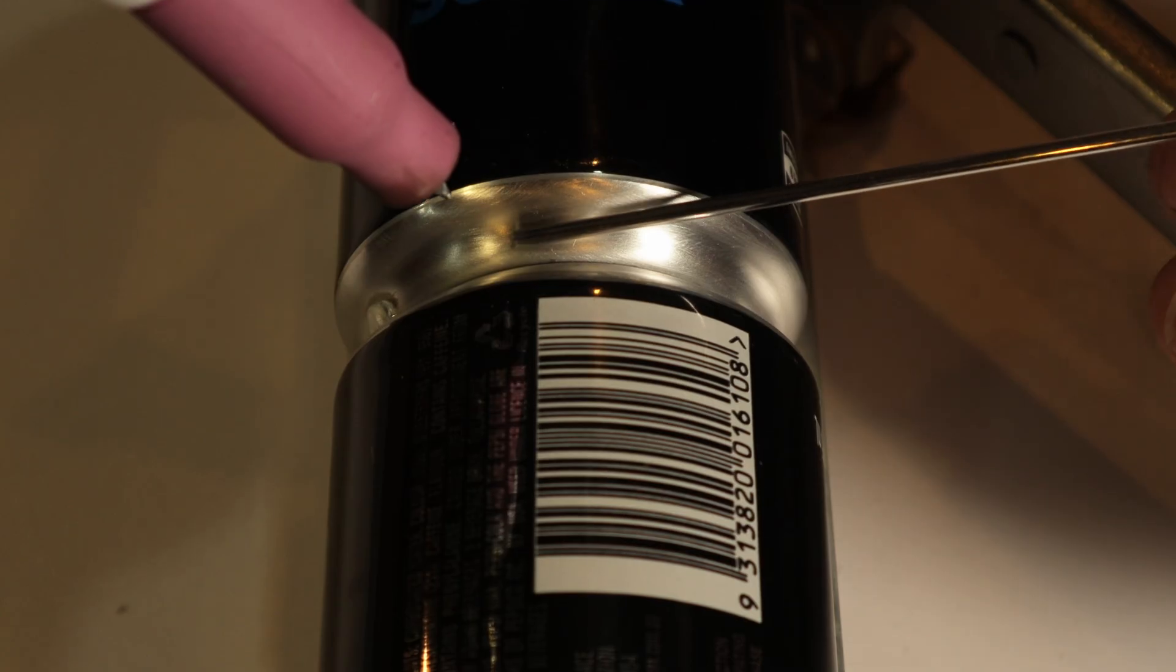What's up welders? In this video I'm going to show you how to TIG weld some thin aluminum, and because I didn't have any lying around I decided to weld some aluminum cans.